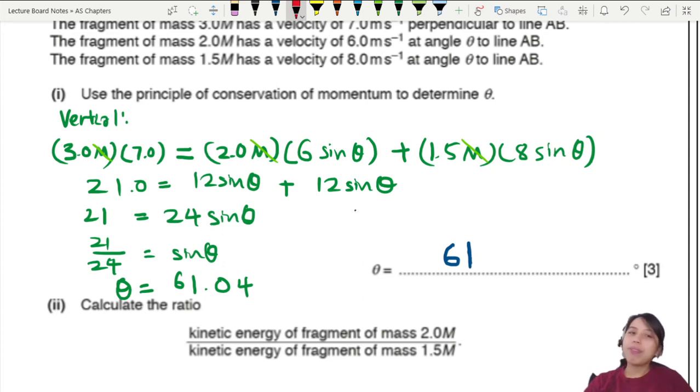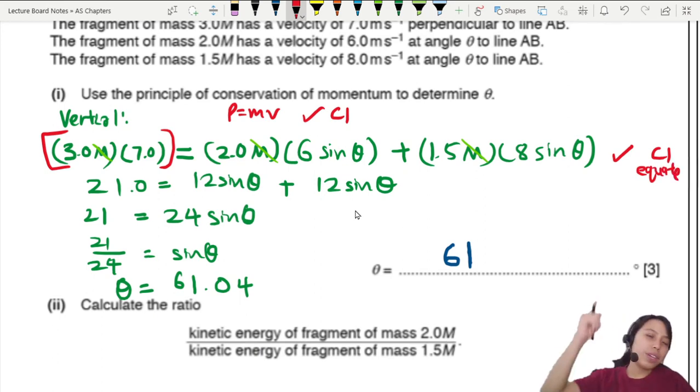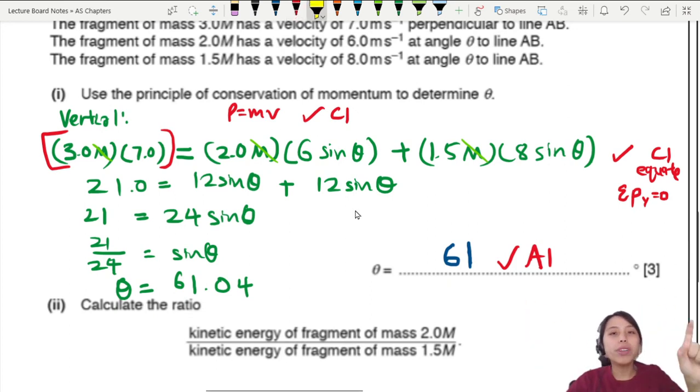So one mark comes if I can see you using P equals to MV in your working, whether explicitly or in a calculation like this, you multiply mass times velocity. Then the second mark comes if you equate everything in the horizontal. So for example, this step will be an example. You equate either those that's moving up versus those moving down, or you know the idea that total momentum in the vertical is zero. Show this idea. Then of course, final mark for your final answer. So remember, separate horizontal vertical. This is only in the vertical.